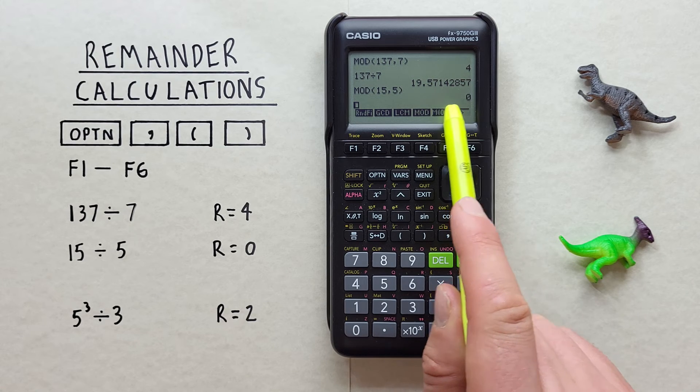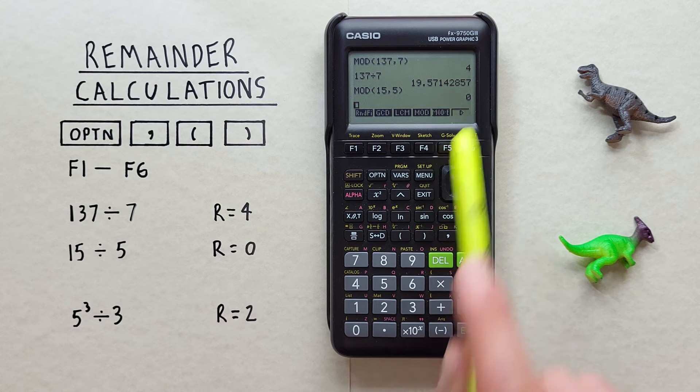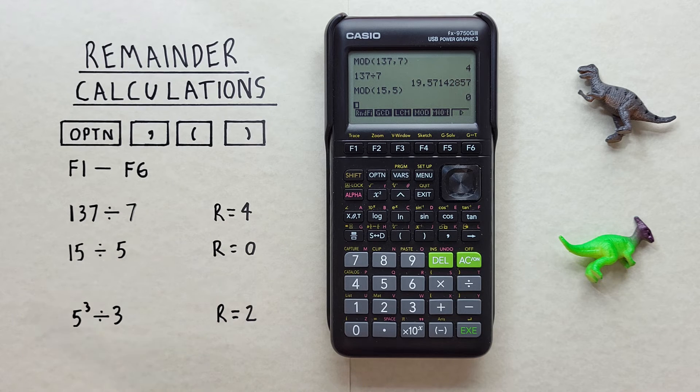And we get a remainder or modulus of 0, which makes sense because we know 5 goes into 15 3 times with no remainder.